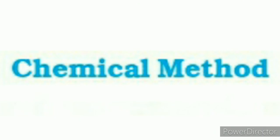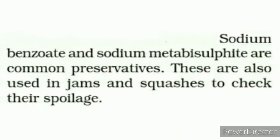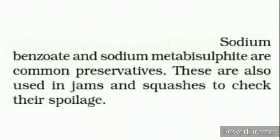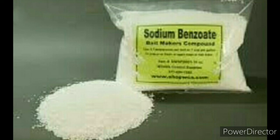The first method to preserve food items is the chemical method. Sodium benzoate and sodium metabisulphite are common preservatives. These are used in jams and squashes to check their spoilage. Sodium benzoate और sodium metabisulphite ये दोनों chemical preservatives होते हैं, जिनका इस्तेमाल फलों से बनाये गए जैम और squash को सुरक्षित रखने के लिए किया जाता है। जैसा कि आप इस picture में देख सकते हैं, sodium benzoate नाम का chemical preservative दिखाया गया है।